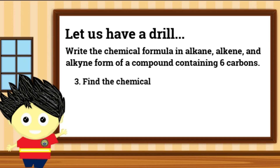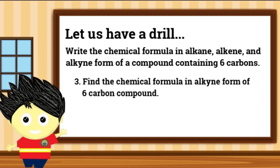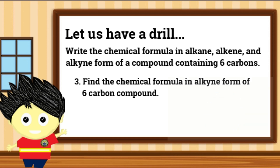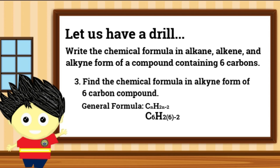Now, let us try to write the chemical formula of an alkyne compound with 6 carbons. Muli, ang general formula upang makuha natin ang chemical formula ng isang alkyne compound ay CnH2n-2. Ngayon, isubstitute na natin sa bawat N ang given number of carbons na 6. Kung gagawin natin ito, ito ay magiging C6H(2×6−2). At kapag na-perform natin ang operation: 2×6=12, then 12−2=10, magkakaroon tayo ng isang alkyne compound na may chemical formula na C6H10 na may 6 na carbons.